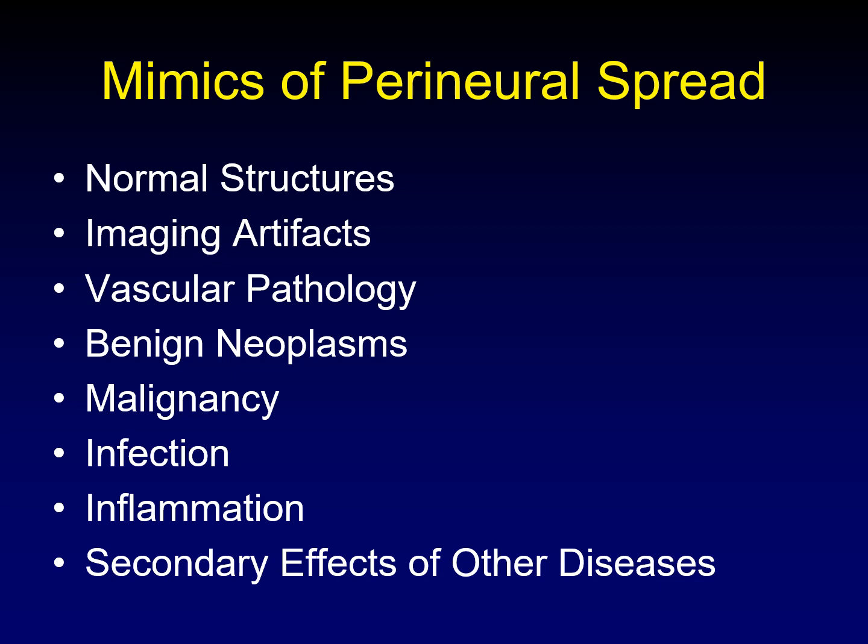Now that we've talked about the normal findings we expect to see in perineural spread, what are some diseases that can mimic it? I've laid out some categories, and we are going to run through each of these categories and give specific examples of mimics in each.